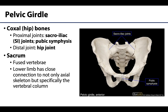Just as we had a pectoral girdle associated with the upper limb, there is a pelvic girdle associated with the lower limb that serves to connect the axial skeleton to the lower appendage. The pelvic girdle is in an intermediate position between the trunk and the appendages. There are two coxal bones, or hip bones, that articulate with one another at the anterior pubic symphysis, which is a cartilaginous joint.